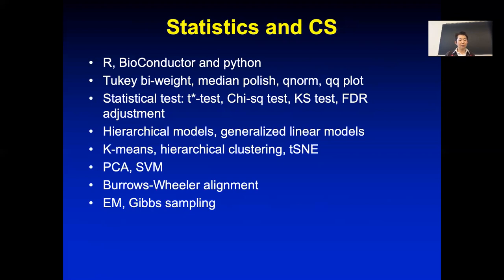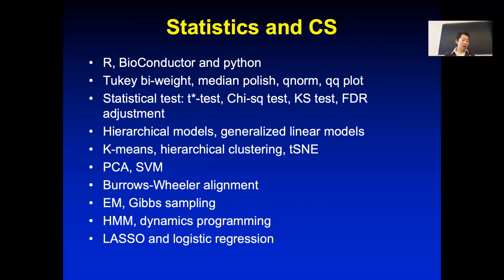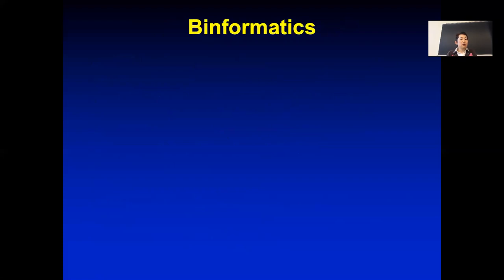We talked about hidden Markov models and dynamic programming to identify chromatin states or predict protein structures. We talked about LASSO and logistic regression to identify important features — which features matter for drug response, whether a CRISPR screen is working, or which genes are important for survival. We also talked about survival analysis and many bioinformatics algorithms.